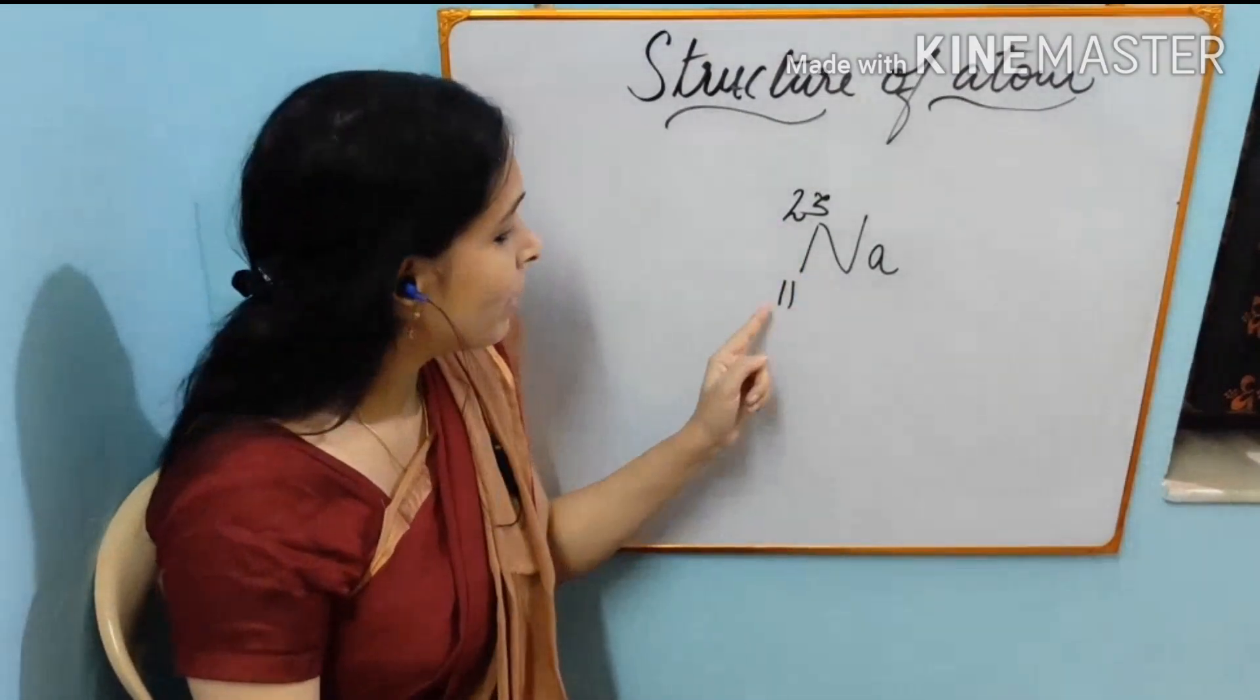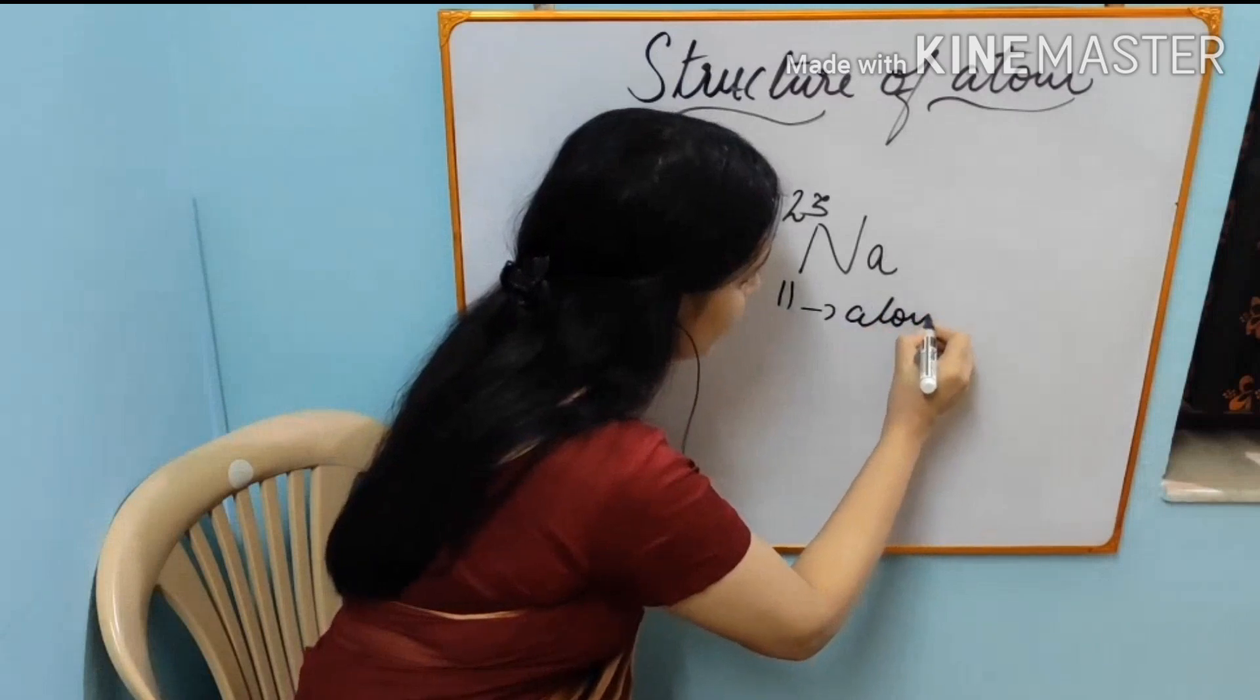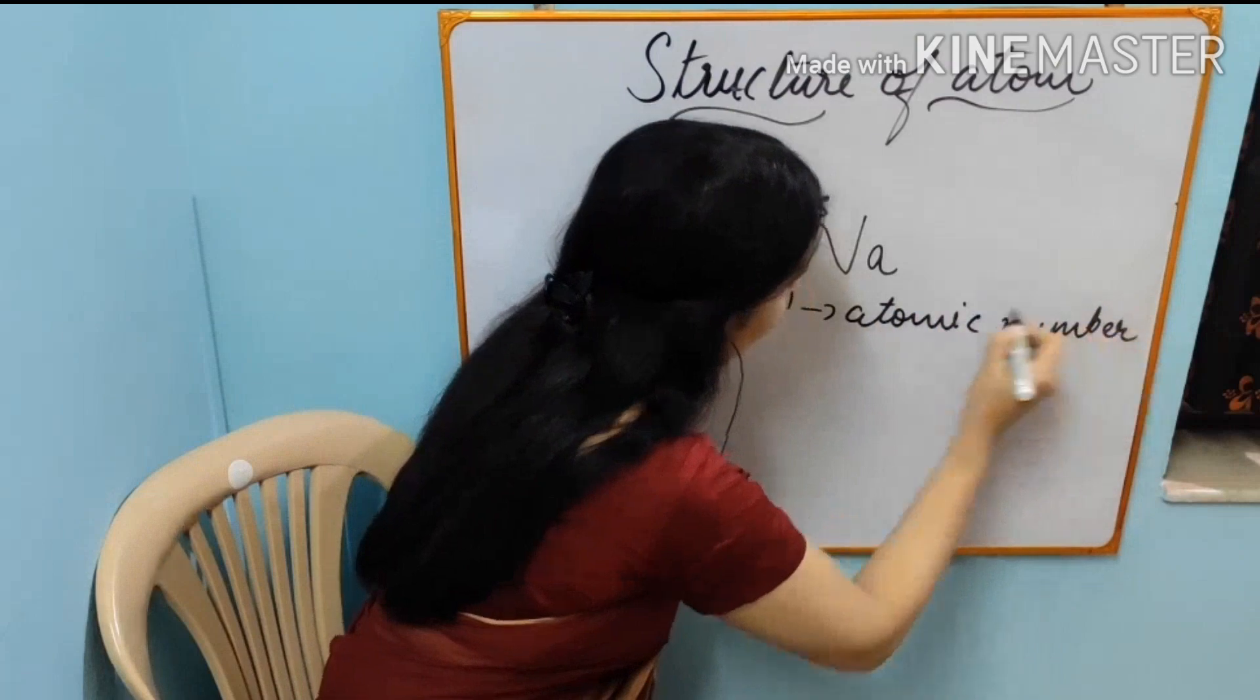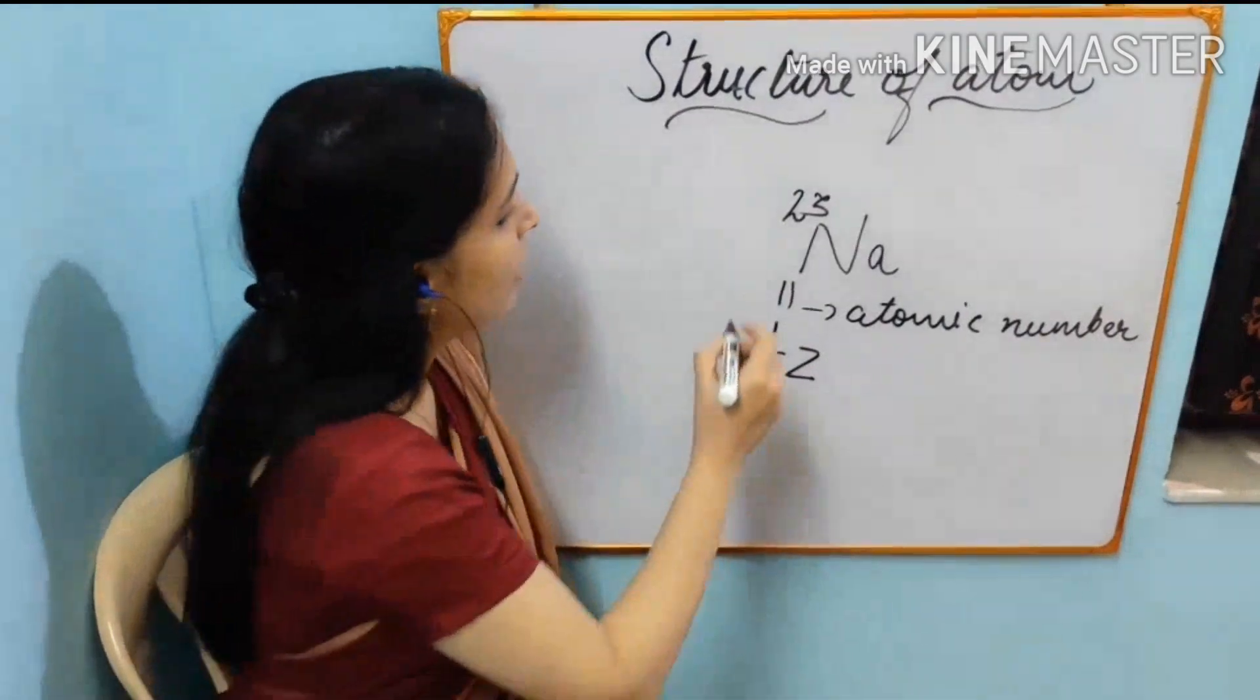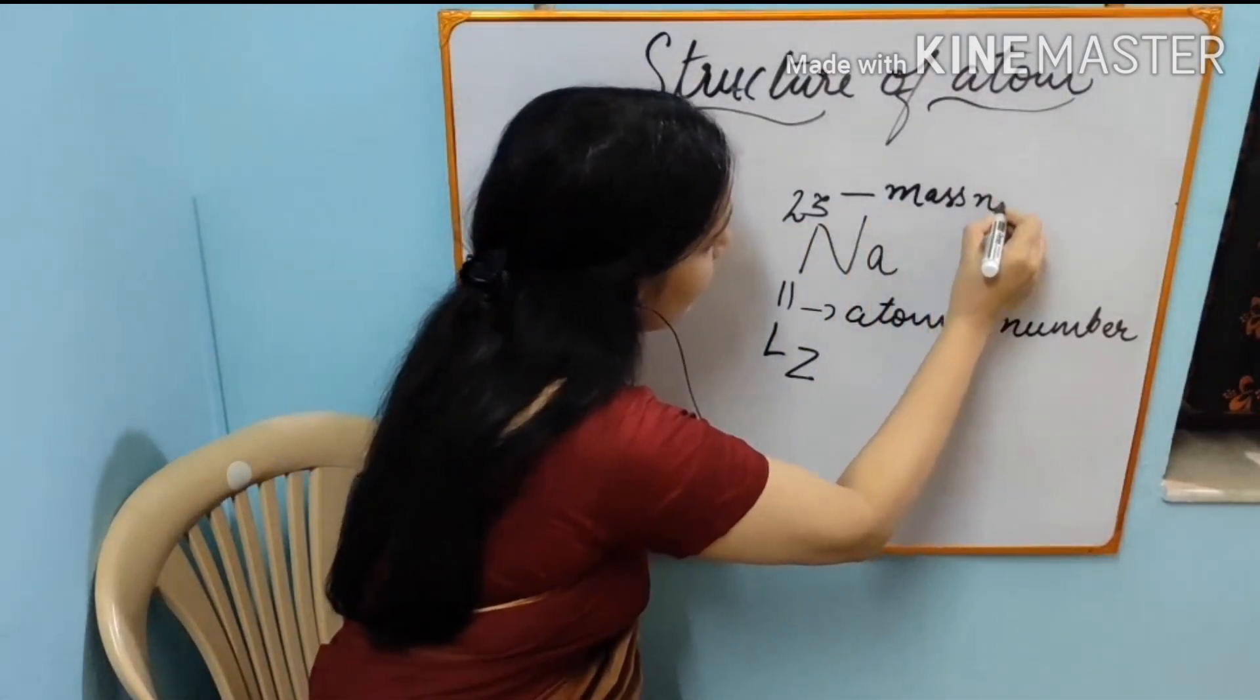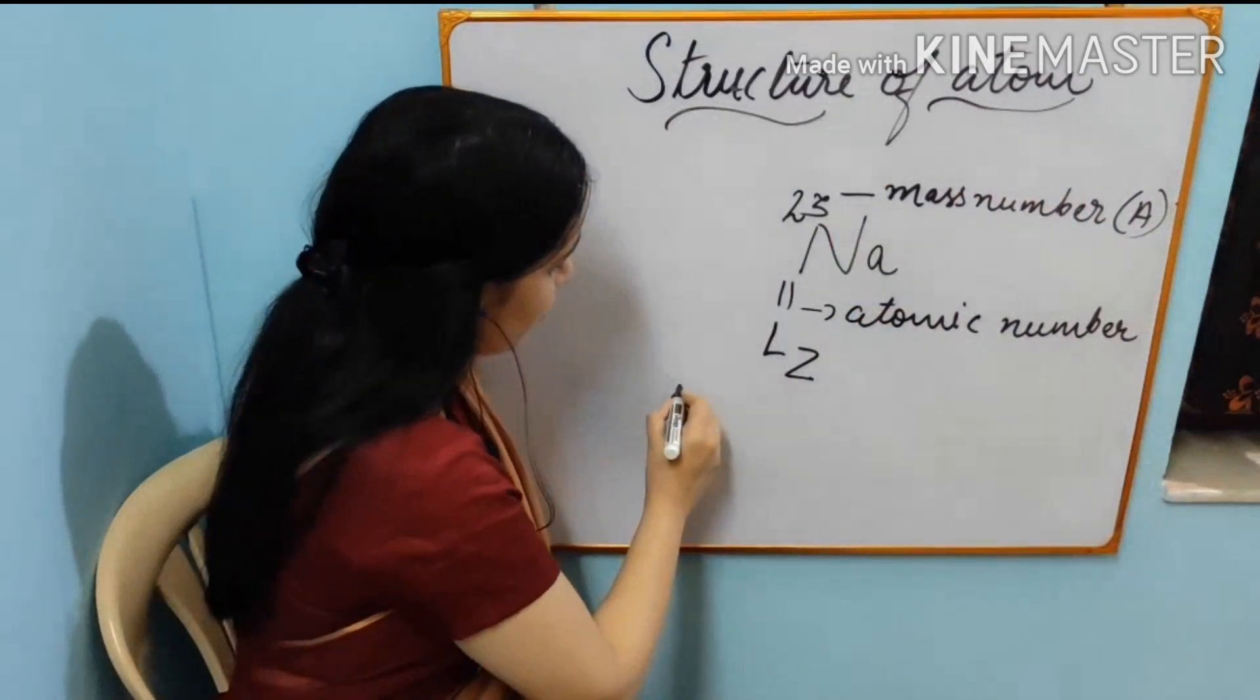Anyway, you can see the atomic number and mass number here. This is atomic number denoted by z. This notation is all you should know. And this is mass number denoted by a.